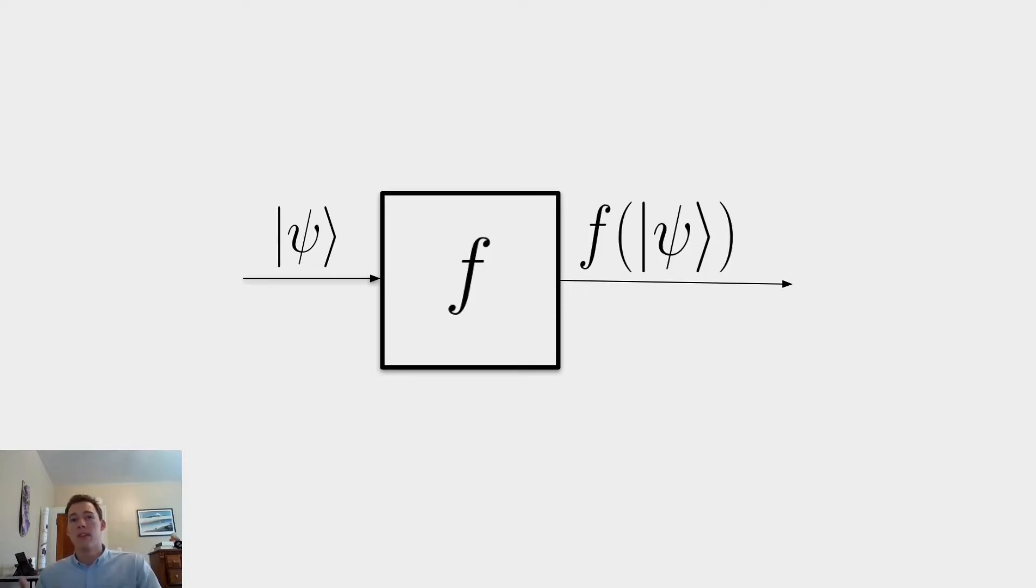However, we have a problem with this diagram here. If you remember from my previous lecture, which I'll put a link to in the description, quantum operations by their very nature have to be reversible. As it is right here though, this operation would not necessarily be reversible. For example, if f was constant zero, the output of f would in no way allow us to calculate the input state psi. This is a common issue in quantum computing. And luckily, there's a pretty easy workaround, we just use what are called ancilla qubits.